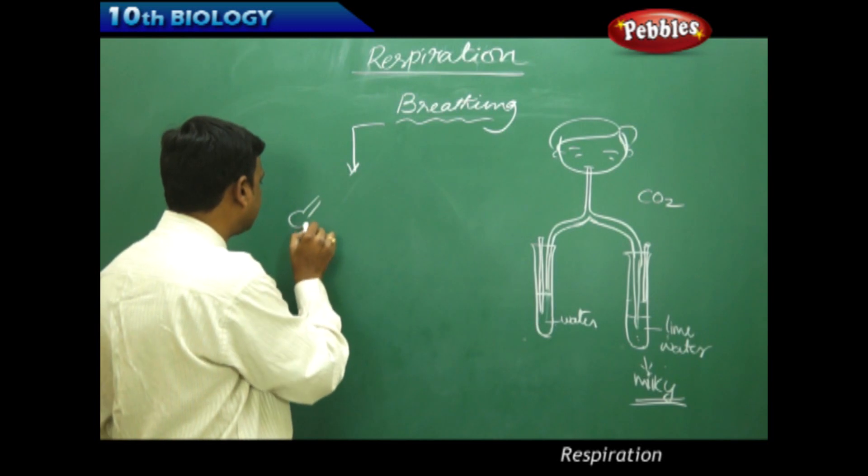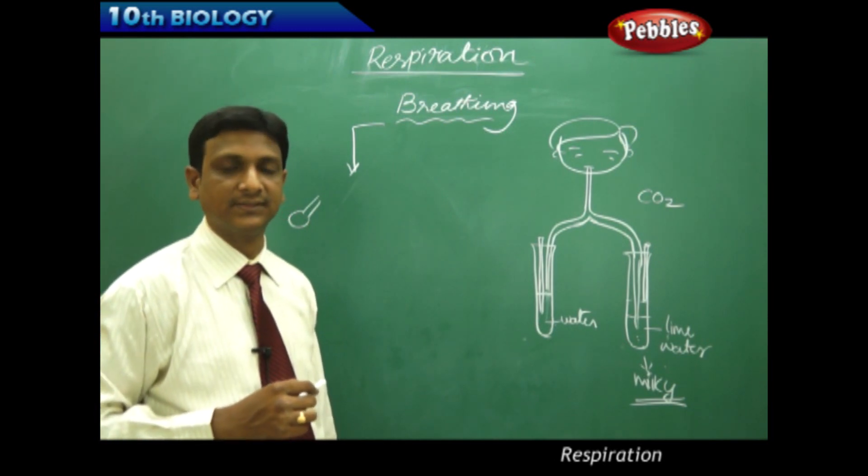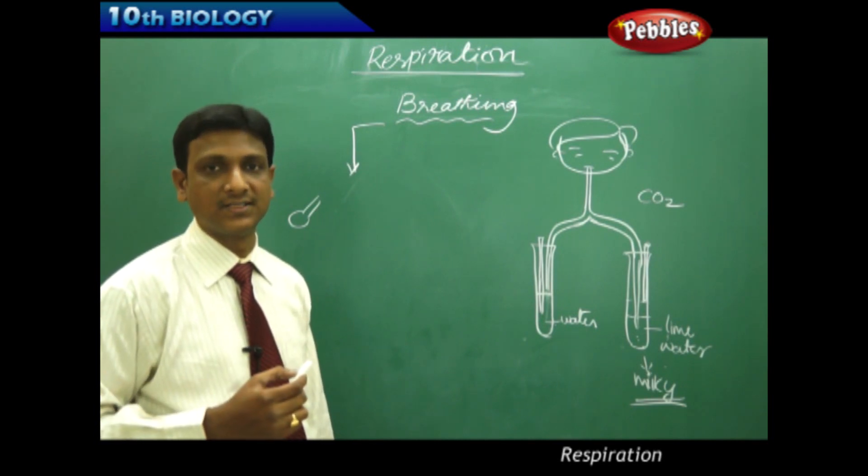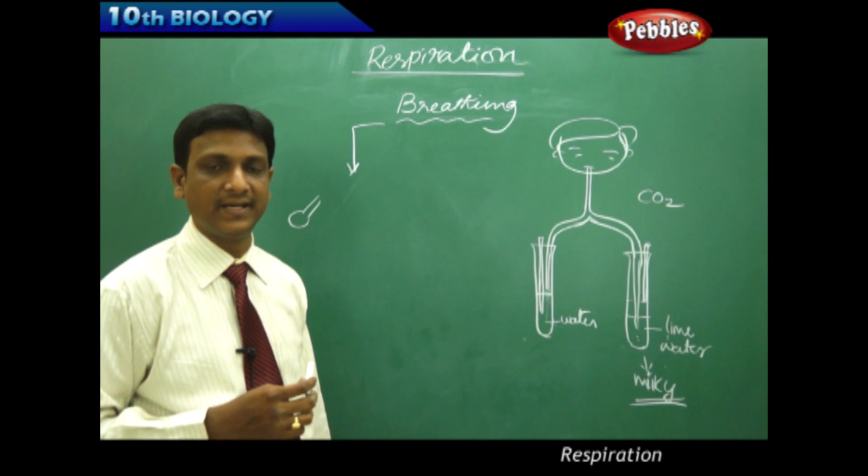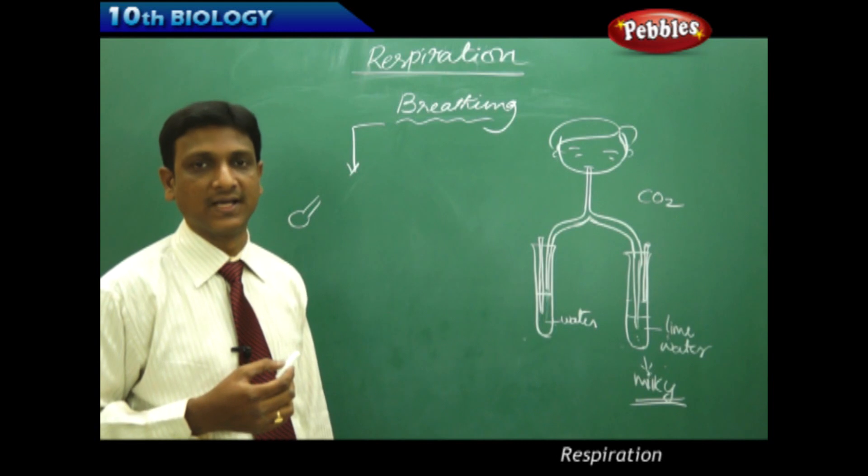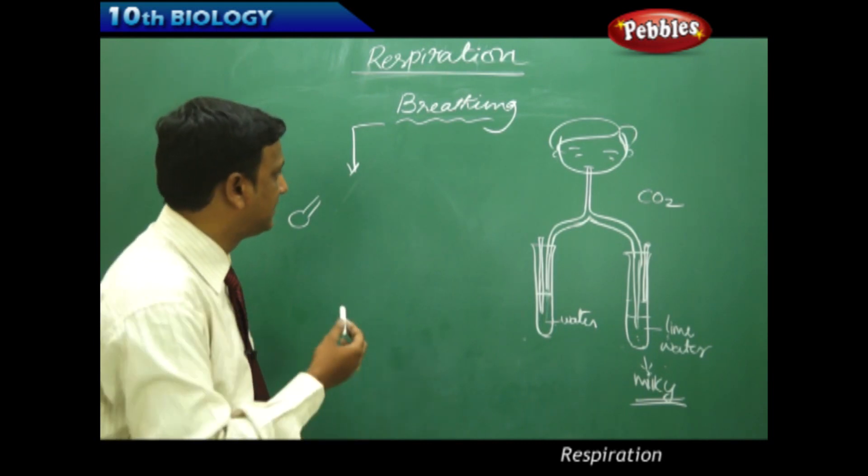So alveoli are the tiny sac-like structures that are found in our lungs. That is the ending part. From there the exchange of gases takes place between the blood and lungs. Alveoli are the functional units of our lungs, which are the tiny sac-like structures.